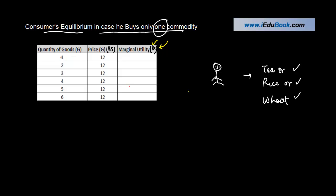As the consumer consumes more and more of a commodity at a constant price, there are four key assumptions: first, the goods are given; second, marginal utility can be measured in terms of money; third, the marginal utility of money remains constant; and fourth, the consumer's income is given.